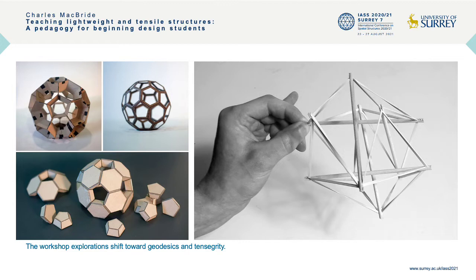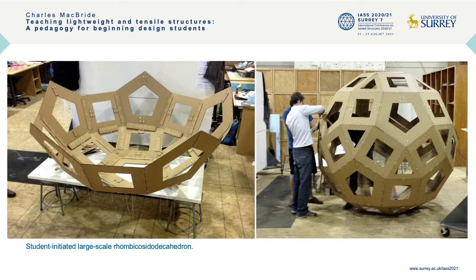The most recent workshop developed an interest in cable nets in the work of Frei Otto, while the first workshop seen here developed an interest in geodesic shapes and the examples of Buckminster Fuller. Generating the models and variations on the left can be done easily using a laser cutter. The first workshop students initiated their own project outside of the course assignments, constructing a rhombicosidodecahedron nearly eight feet in diameter. This unexpected project worked to coalesce the students and further increase the dynamics of understanding geodesic structures.